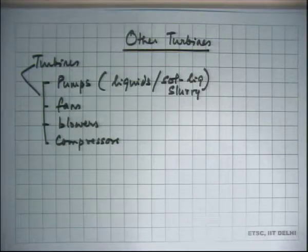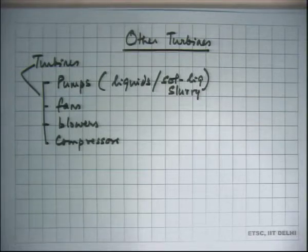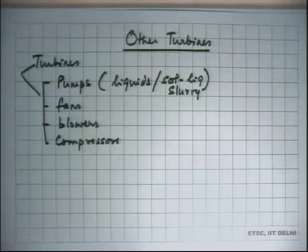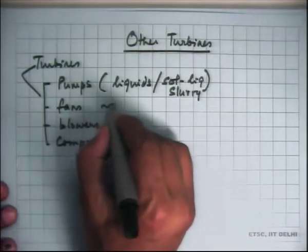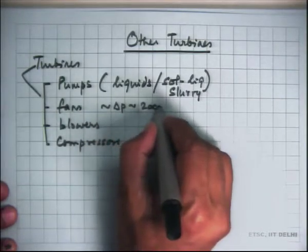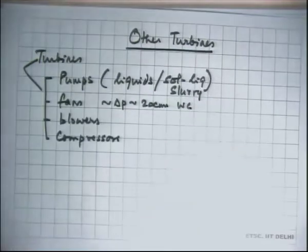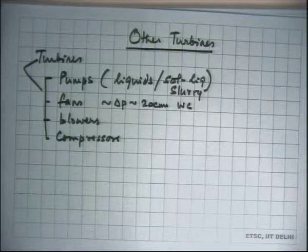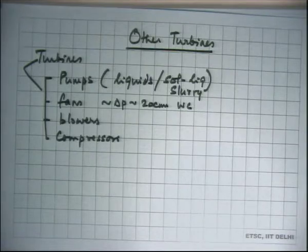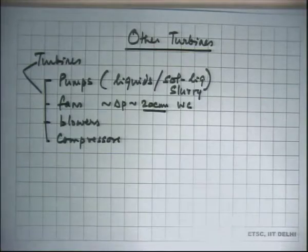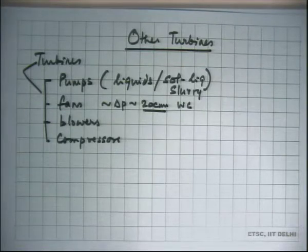Fans are devices which produce a small pressure rise in air streams — pressure rise delta P up to about 20 centimeters of water column. If you measure the pressure difference between the inlet and outlet of the fan using a manometer with water as the working fluid, you get a maximum of about 20 centimeters of water column. These are low pressure rise machines, usually used for very large air flow rates but small pressure rise.